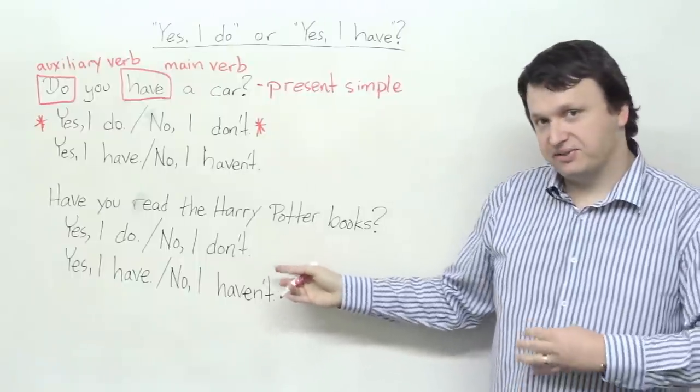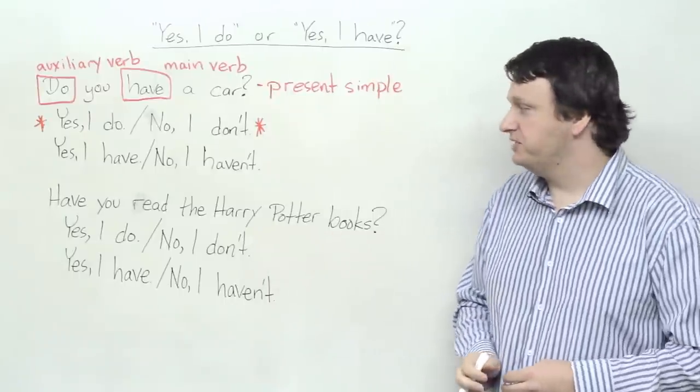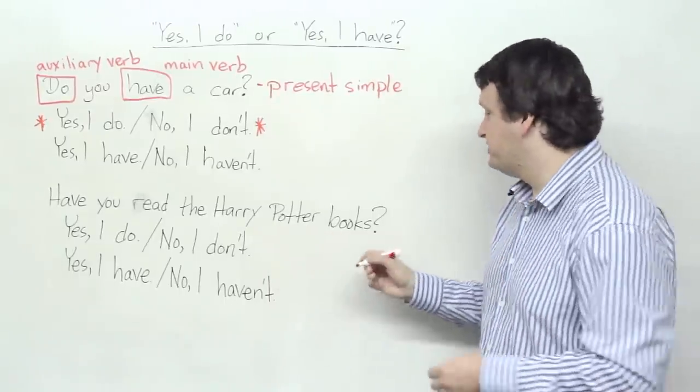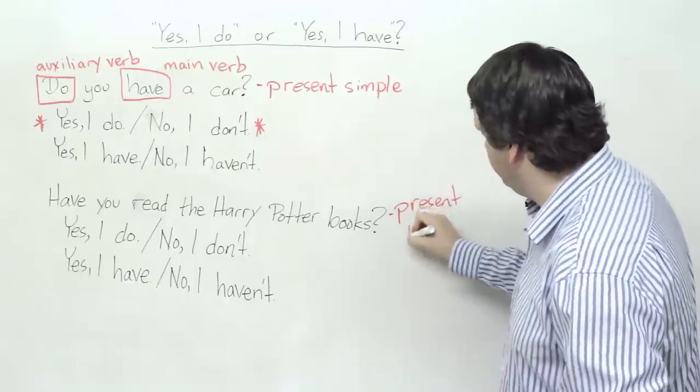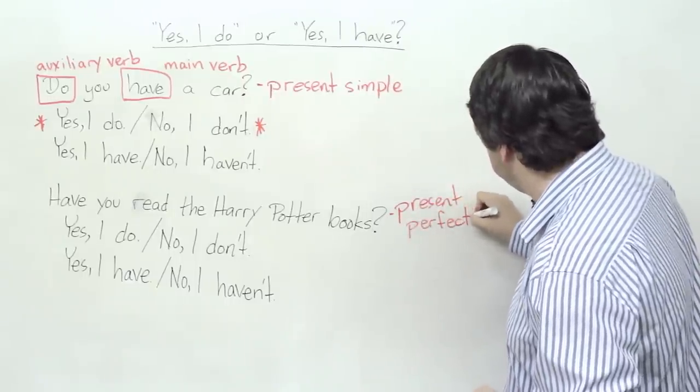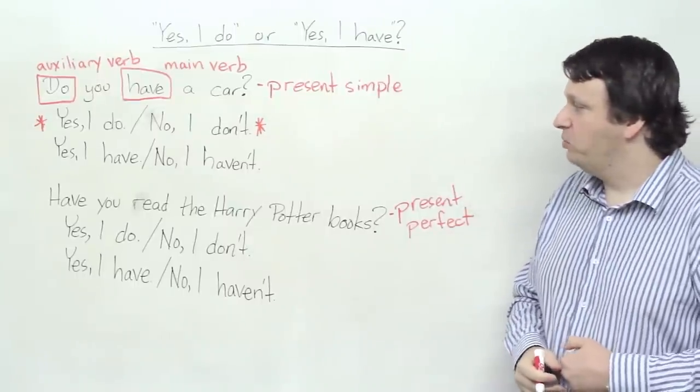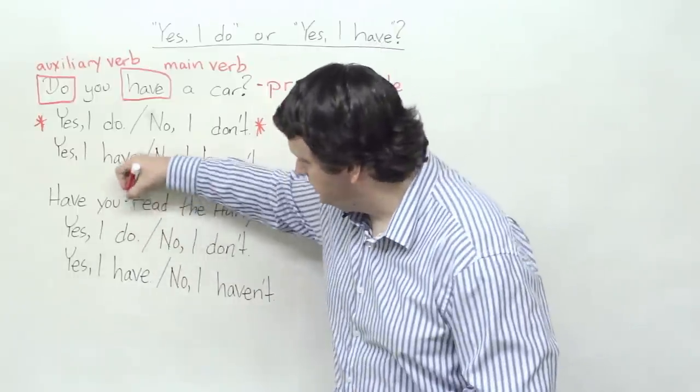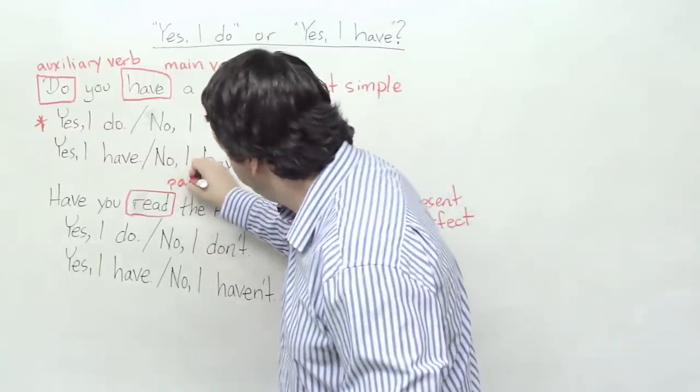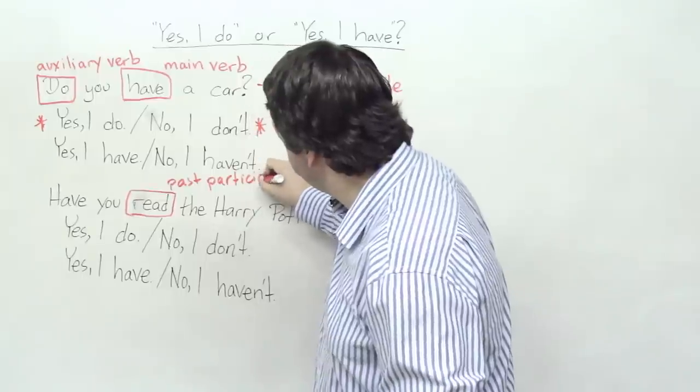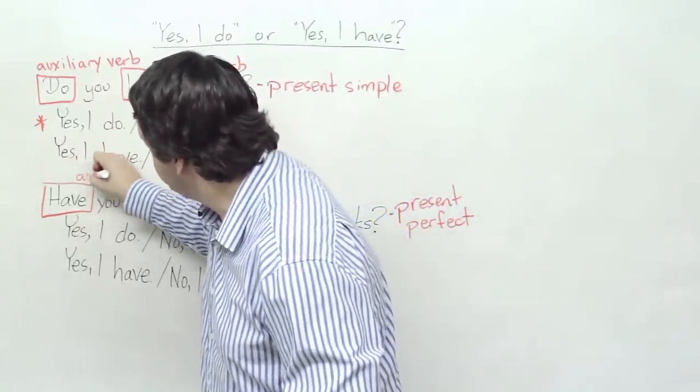Here, I think the answer is obvious already, but let's go through it. Have you read the Harry Potter books? Now, this question, what tense is it? Correct. Present perfect. So present perfect, as you might know, has the auxiliary verb have and the main verb, which is a past participle. So, what is the past participle here? It is read.